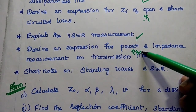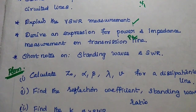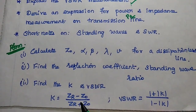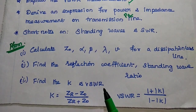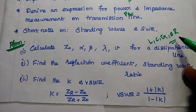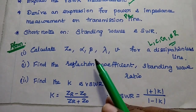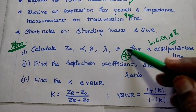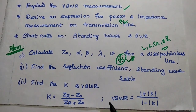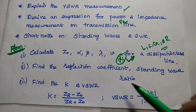Short notes on standing waves and SWR ratio — this can be a 2 mark or 8 mark question. In the second unit as well we can expect problems. Here also they have given us the line constants L, C, G, and R for a zero dissipation line, from which we can find the characteristics impedance, alpha (attenuation constant), phase shift constant, wavelength, and velocity. We can also expect the question to find out the reflection coefficient and standing wave ratio using the two key formulas for reflection coefficient and VSWR.